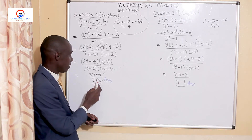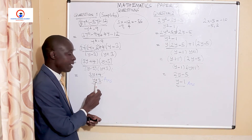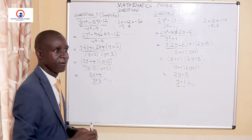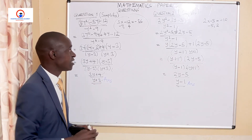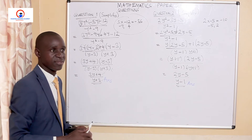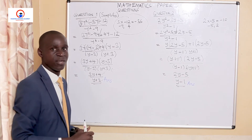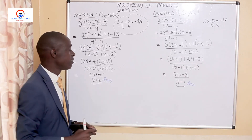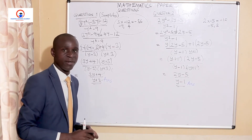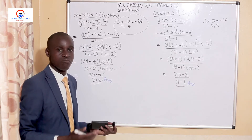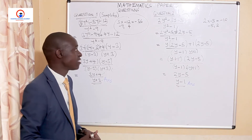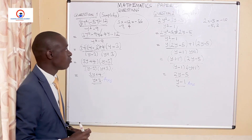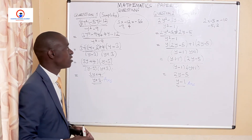So the solution for the first question is 3y plus 4 over y plus 3. At this stage, I'll move on to another similar question from the examination questions. We're going to apply basically the same principles and concepts.